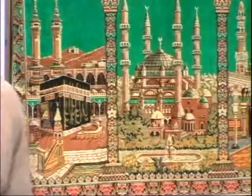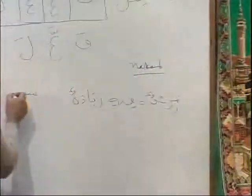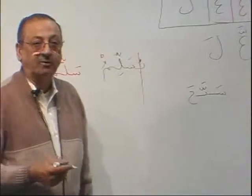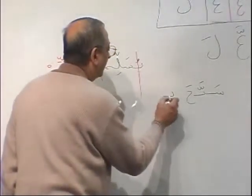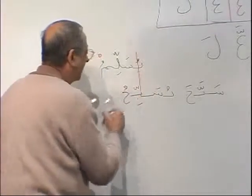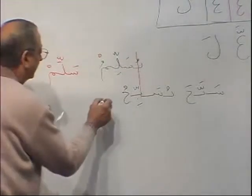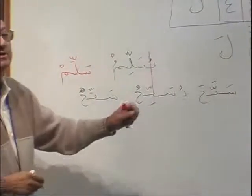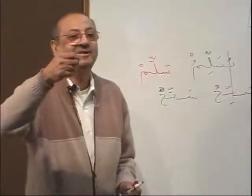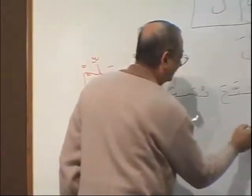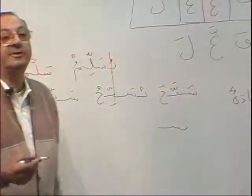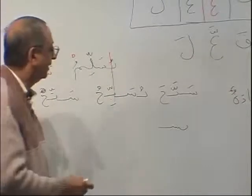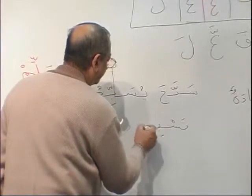Now let me give you a little hint. Subhanallahi amma yushirikuna — this is madhi. In the Quran it comes in the mudariya: yusabbihu. You will also see in the Quran the amar: sabbih. Subhanallahi amma yushirikuna — all the time. And what is the mastar? Tasbih. What is the meaning of tasbih? Glorification — means you glorify. When you take your tasbih: subhanallah, subhanallah.